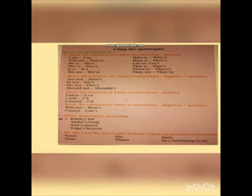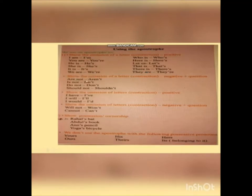Let's move to our textbook. Please take out your textbook and turn to page number 19. Can you see? There are all the things that we discussed — the usages of the apostrophe mark. The first one: show the omission of a letter. There are examples in positive form: 'I am' → 'I'm', 'you are' → 'you're', and so on.